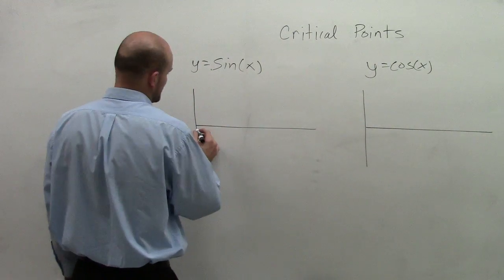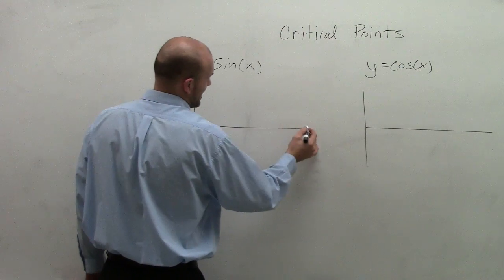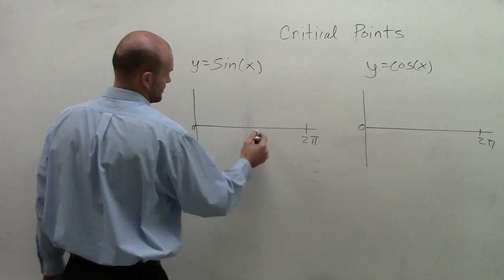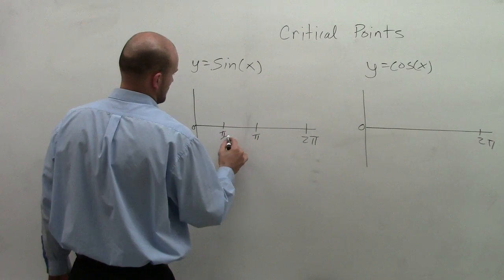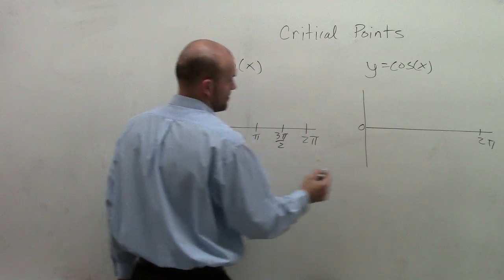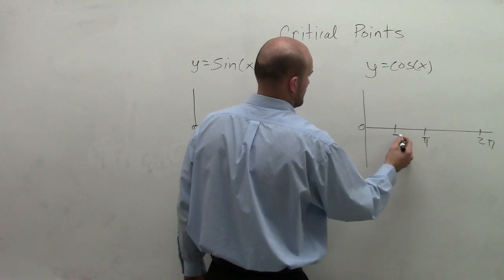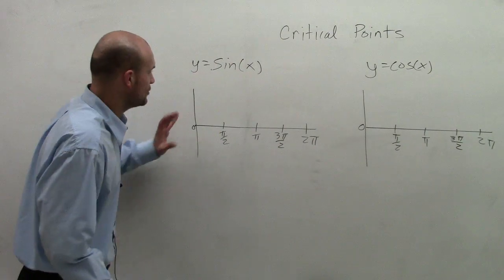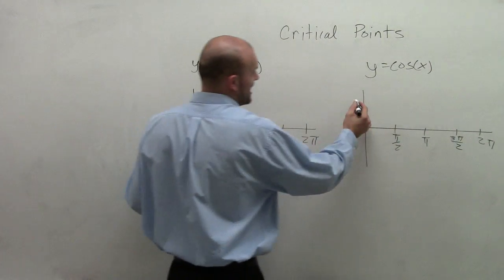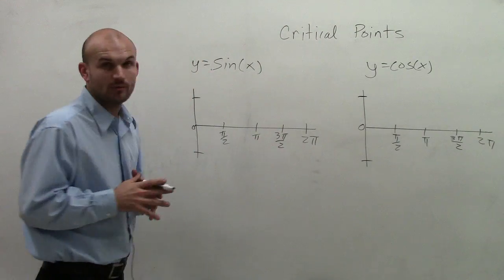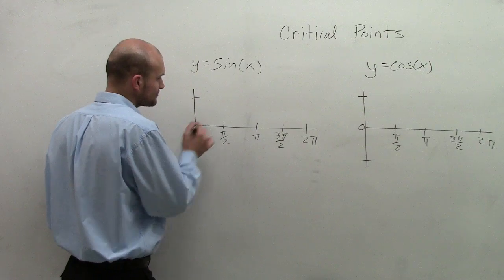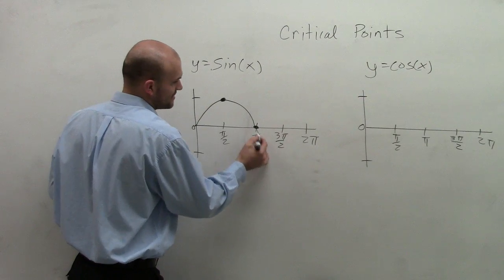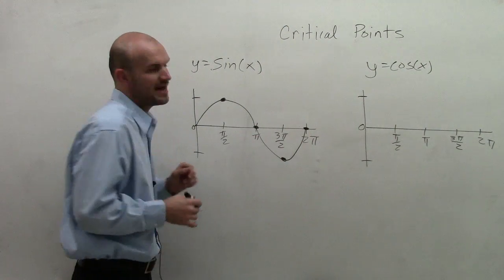Our initial period is going to go from 0 to 2π. Noticing in the parent graph, we only go up as high as 1 and down to negative 1. So when sketching my graph, I'm going to look at my initial period. For the sine graph, it goes immediately up to my maximum, down to my x-intercept, down to the minimum, and then back up to 2π.